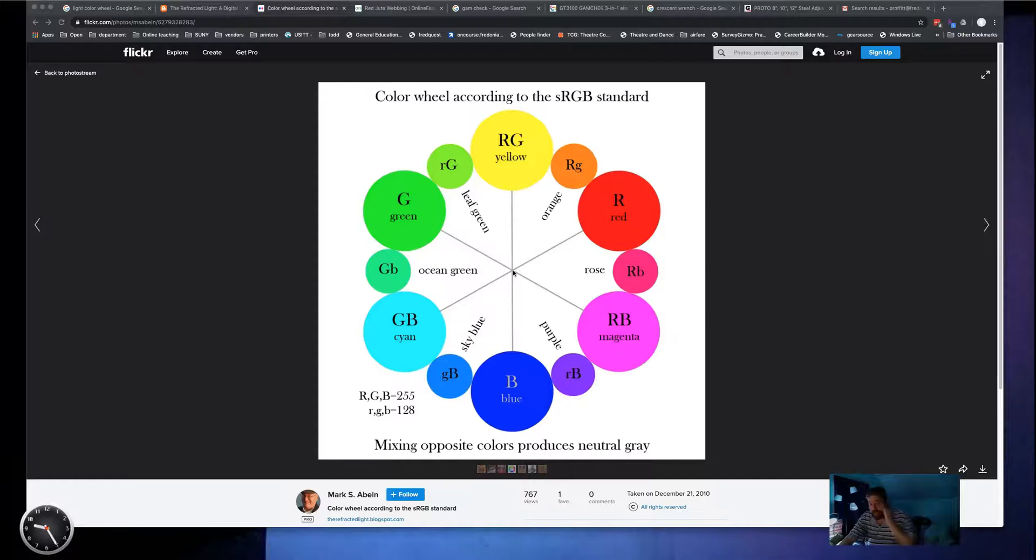You can also make white light by doing a combination of a primary and a secondary. As long as it's across from each other, those two will actually make a white light as well. So red and cyan, blue and yellow, and green and magenta will actually all make white light.